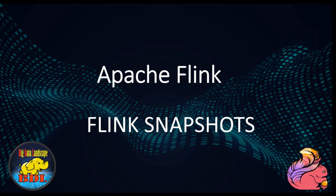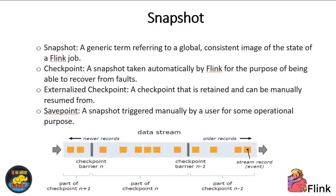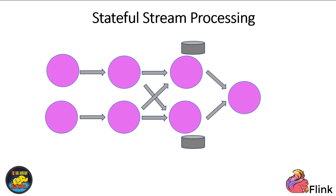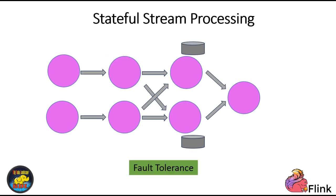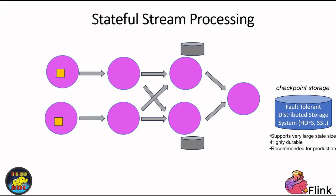Now let's unravel one of the most compelling aspects of Apache Flink: its fault tolerance mechanism through snapshots. We'll dive deep into one of Apache Flink's core strengths — its robust fault tolerance mechanism built around consistent distributed snapshots. This approach relies on fault-tolerant storage solutions such as HDFS, S3, or compatible options, tailored to your specific fault tolerance needs.